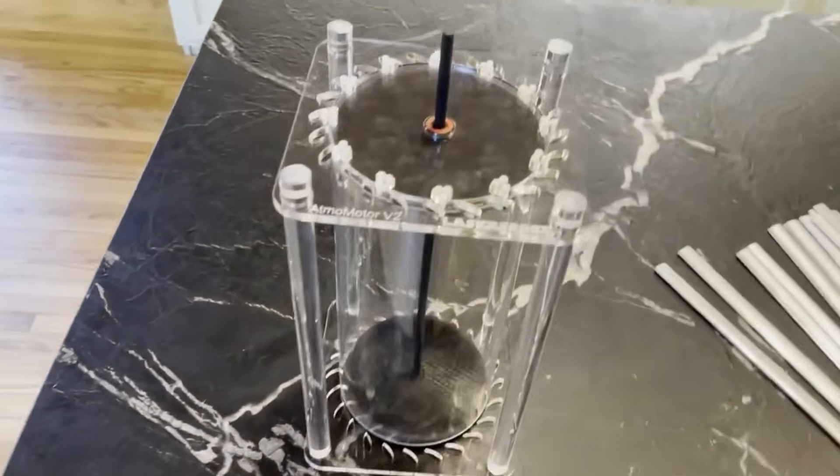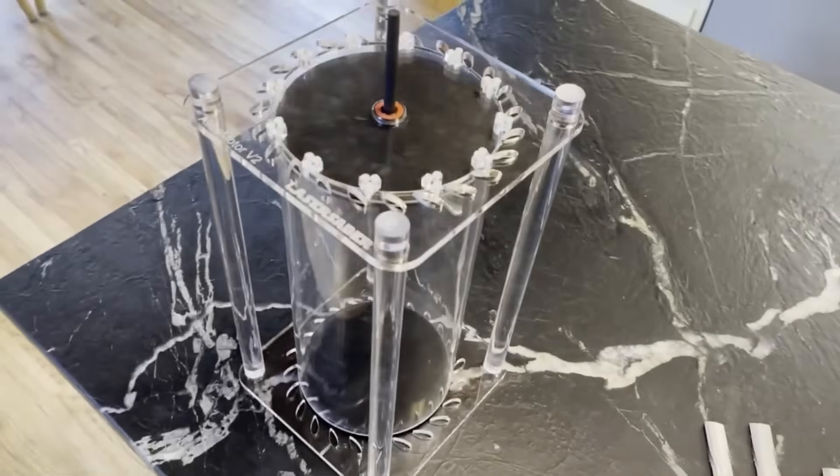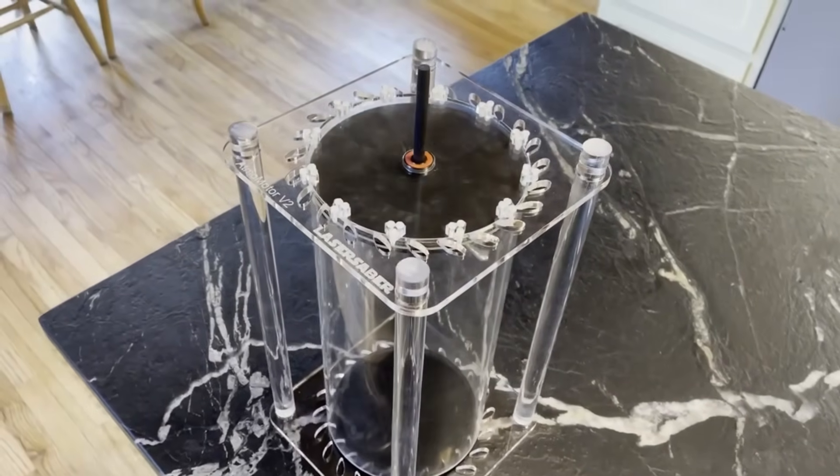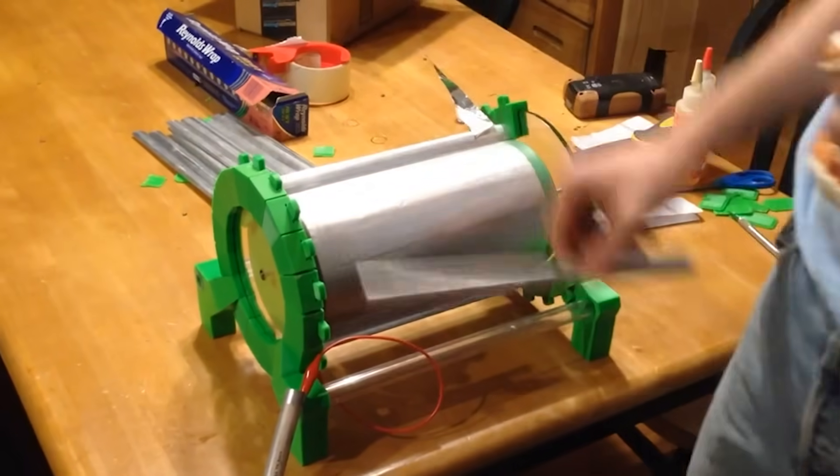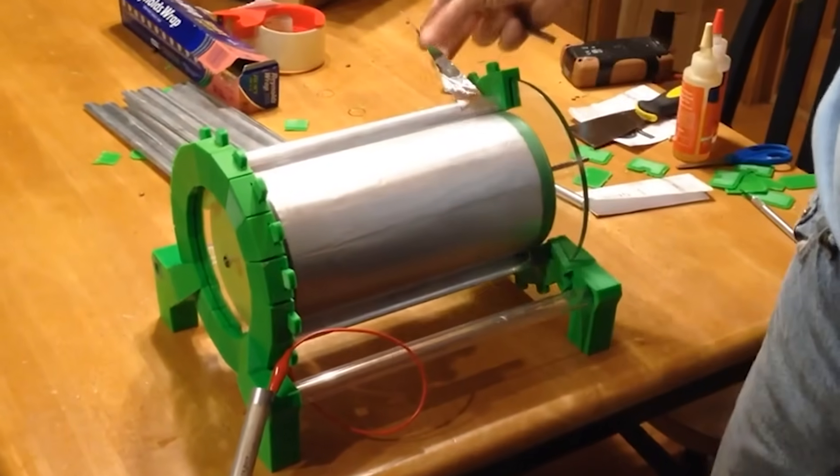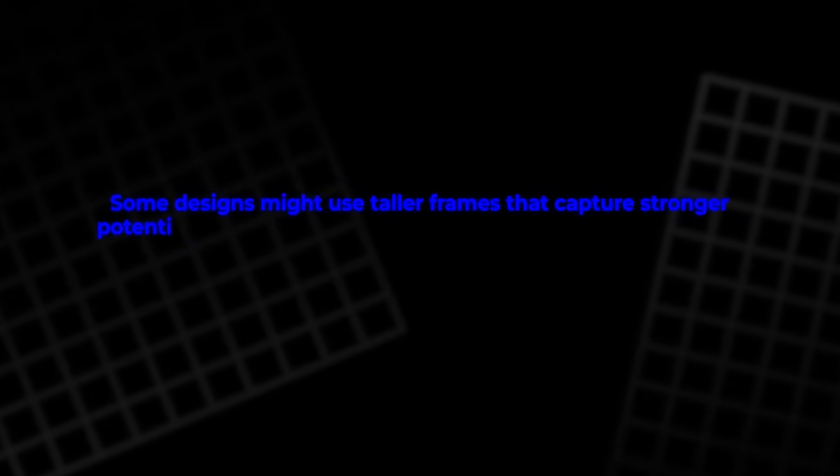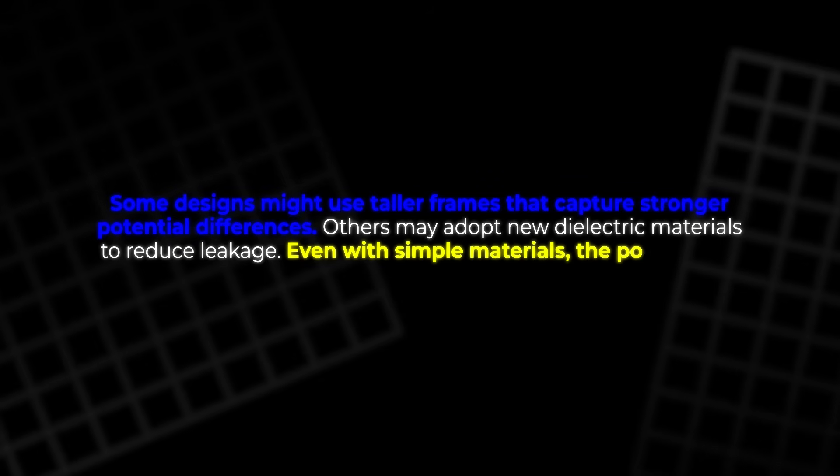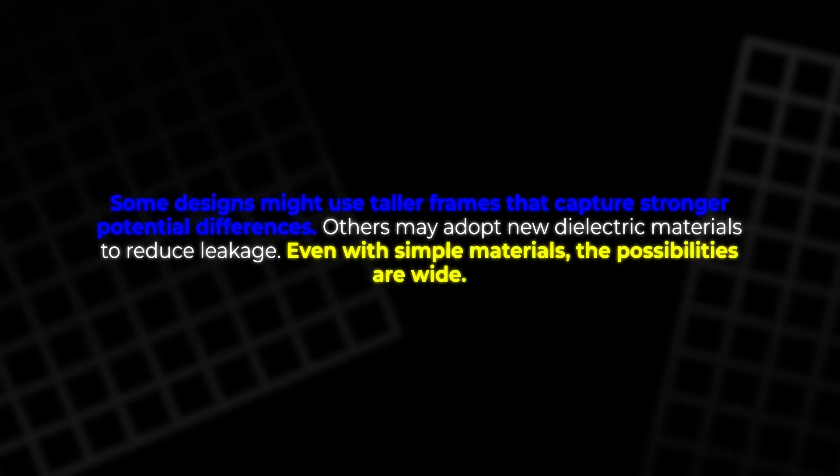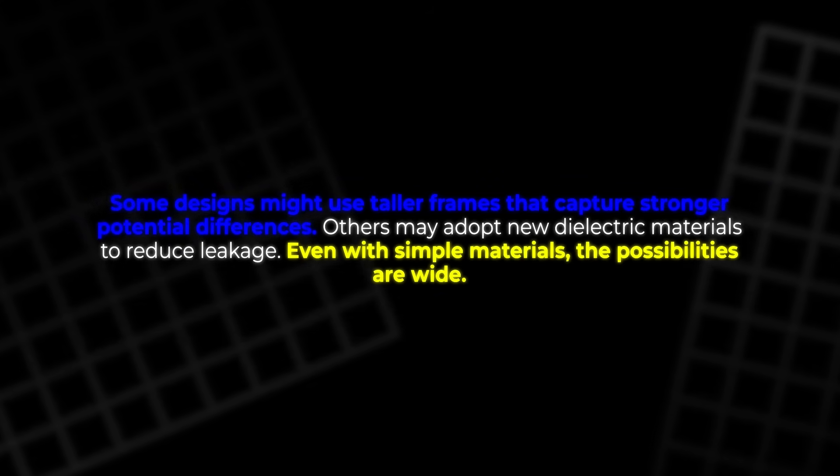As research continues, future versions of this motor may include better spacing, tuned blade shapes, improved electrodes, and automatic collectors that pull electricity straight from the air. Some designs might use taller frames that capture stronger potential differences. Others may adopt new dielectric materials to reduce leakage. Even with simple materials, the possibilities are wide.